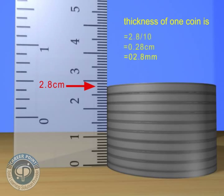Hence, to determine the thickness of one coin, we must divide this reading by 10.